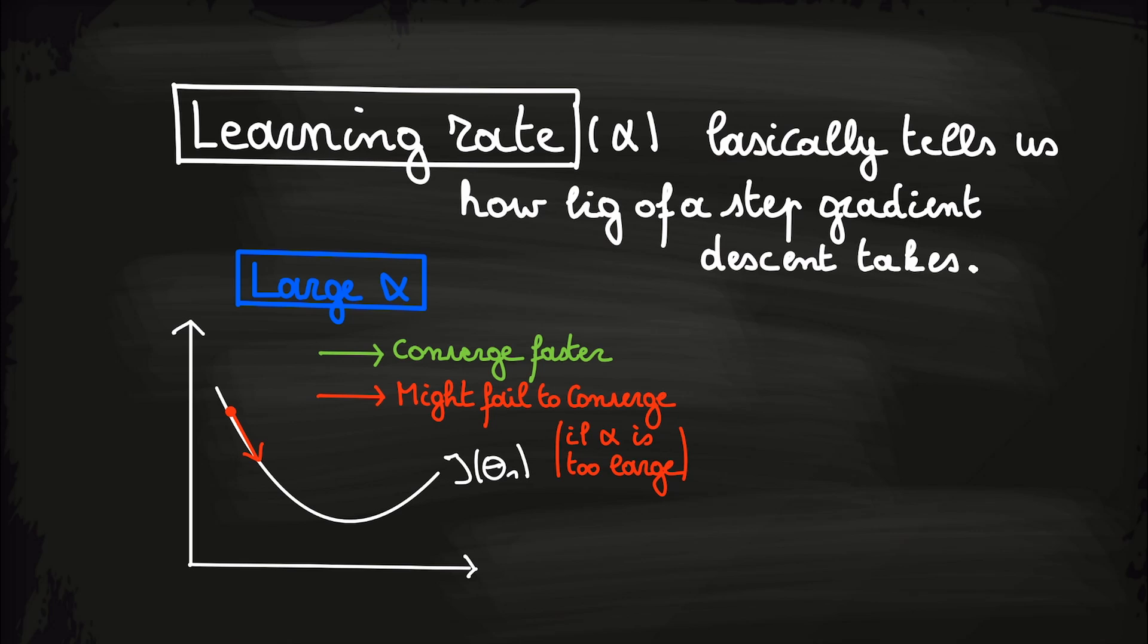Thus, the learning rate being too large might a reason that your gradient descent algorithm is not working correctly like we saw in the last video.